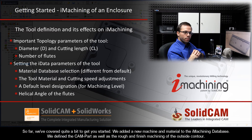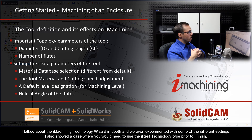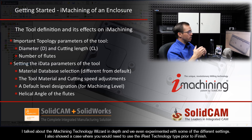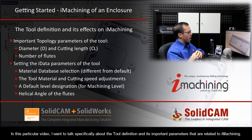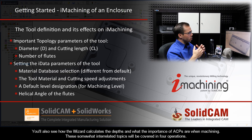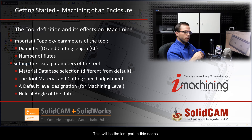So far, we've covered quite a bit to get you started. We added a new machine and material to the iMachining database. We defined the CAM part as well as the rough and finished machining of the outside contour. I talked about the iMachining technology wizard in depth, and we even experimented with some of the different settings. I also showed a case where you would need to use the iREST technology type prior to iFinish. In this particular video, I want to talk specifically about the tool definition and its important parameters related to iMachining. You'll also see how the wizard calculates the depths and what the importance of ACPs are when machining. These somewhat interrelated topics will be covered in four operations. This will be the last part in this series.